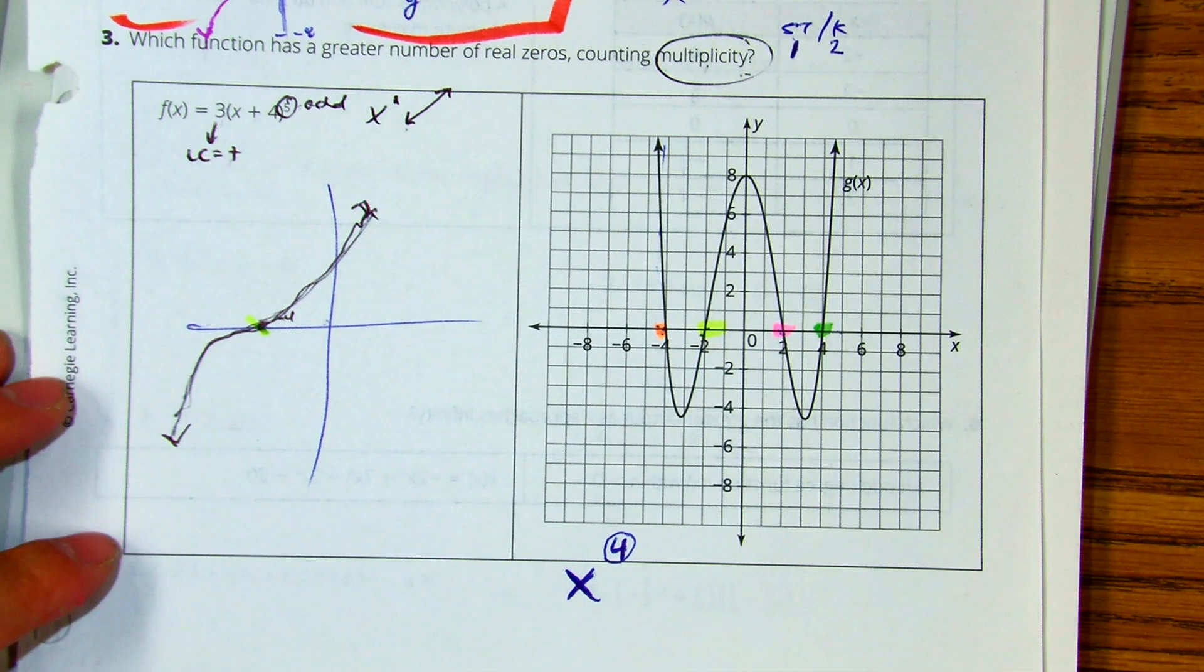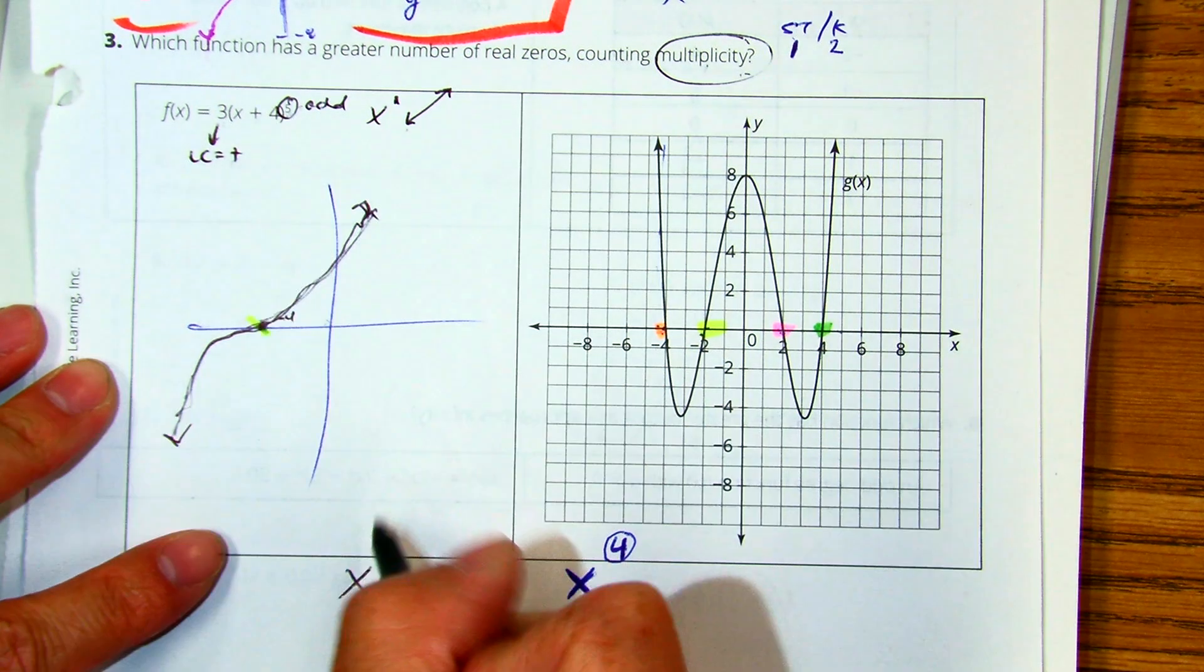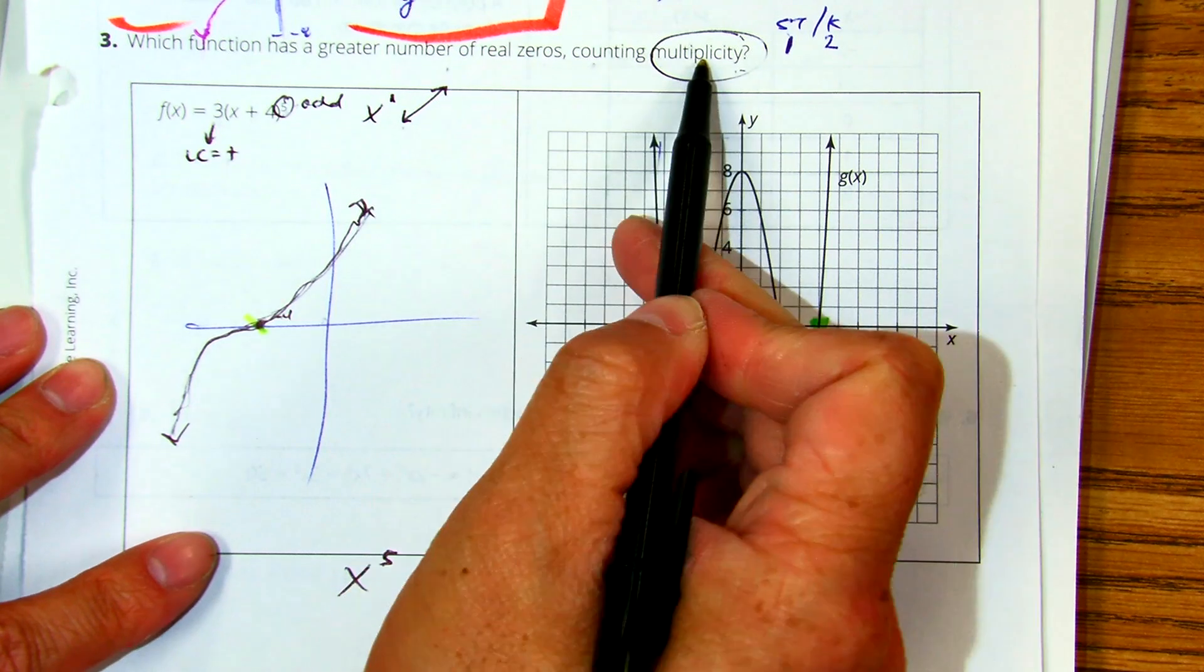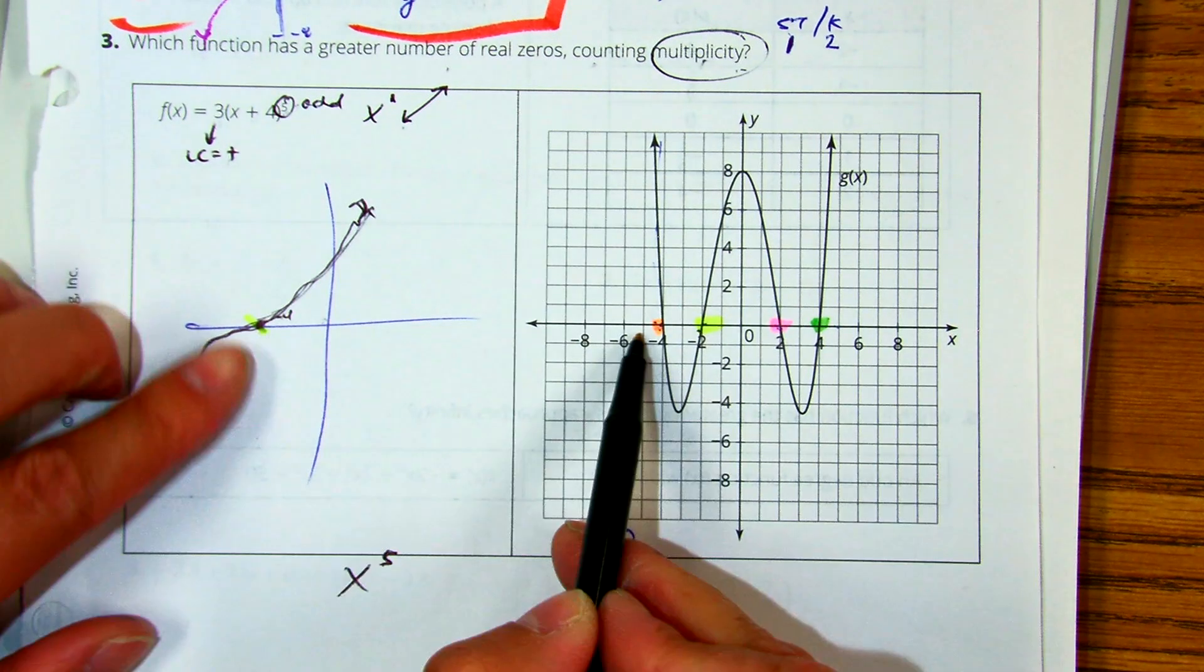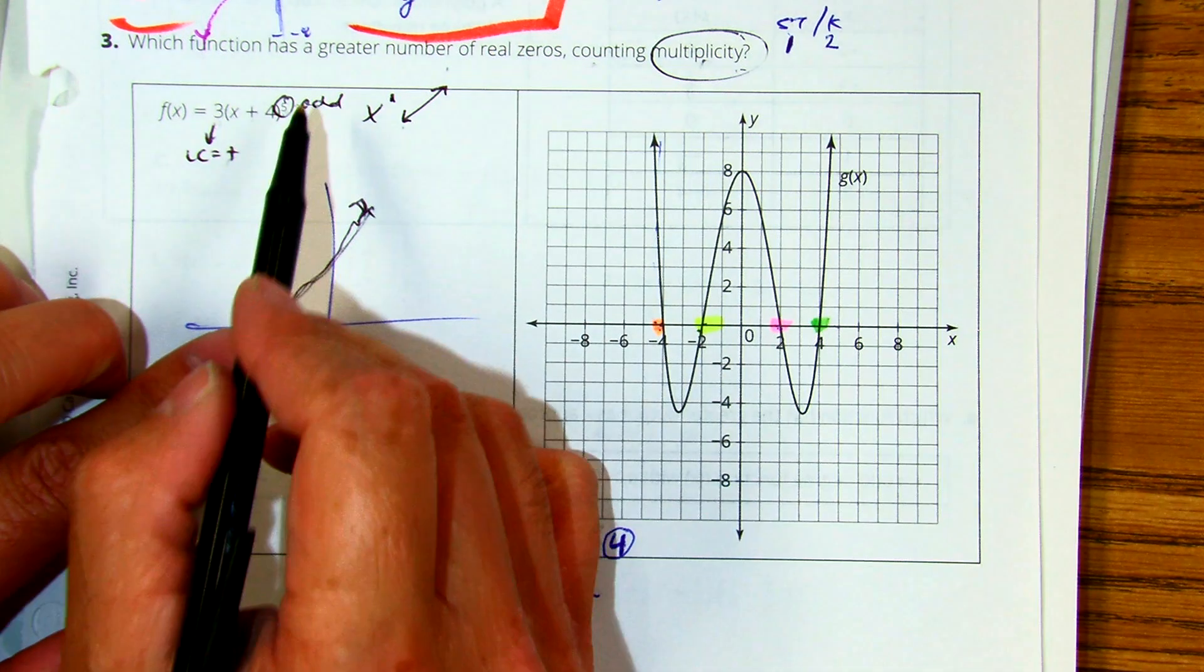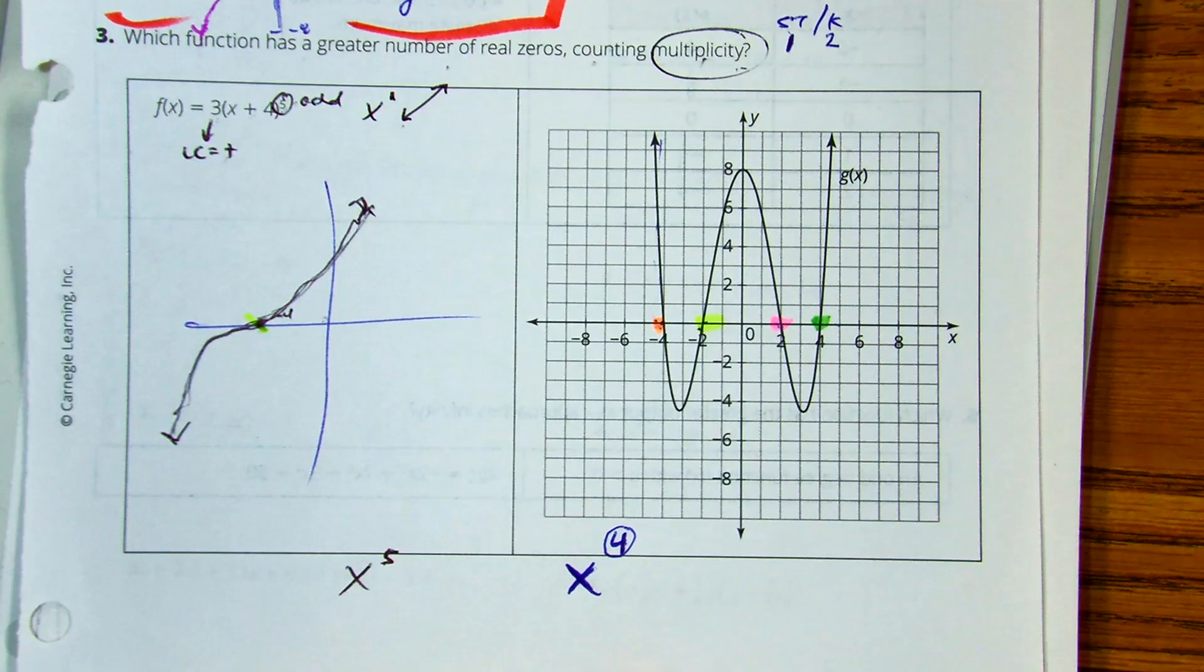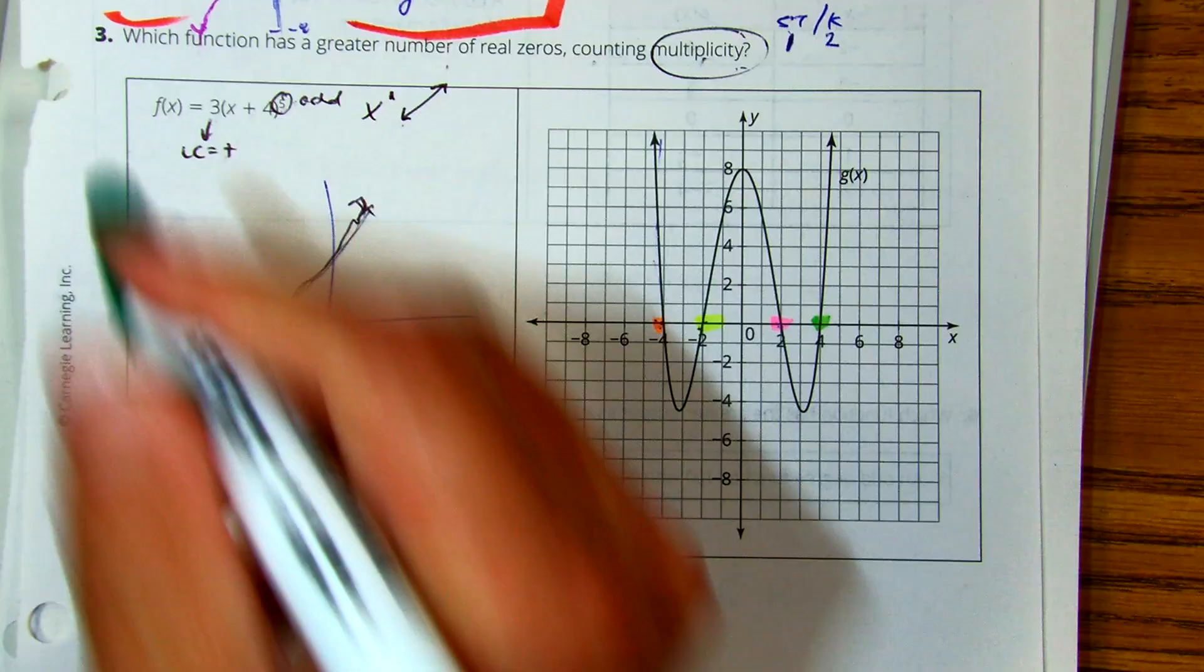Okay, this one only has one distinct zero that's at x equals negative four, but the degree of the polynomial is five. Okay, it says counting multiplicity so you count that, so it's not counting the number of dots or distinct zeros, it's telling you the degree right. And so our answer is which one's bigger, five or four? Five. So the left side is correct.